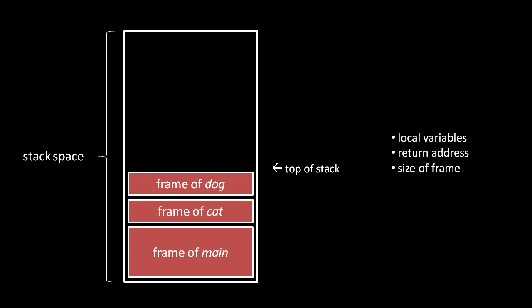Likewise, if cat calls another function, dog, then dog's local variables, the size of its frame, and the return address to cat are stored in another frame on top. Notice that as we add frames, we have to keep track of the top of the stack, because that's where we add a frame when the next function is called. Many CPUs, including x86 CPUs, have a specific register for storing this address, usually called the stack pointer.